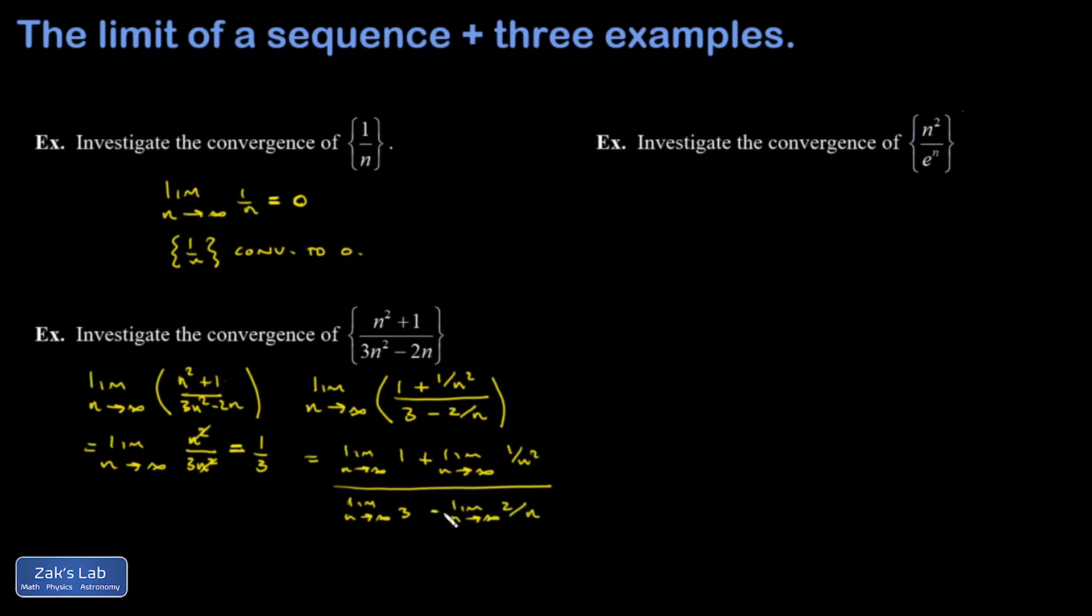I end up with a limit as n goes to infinity of a constant 1 on top, plus a limit as n goes to infinity of 1/n², and then a limit as n goes to infinity of 2/n. The limit of 1/n² is clearly going to zero, and 2/n is also clearly going to zero, so those two terms are gone. The limit of a constant is just the constant, so I end up with 1 in the numerator and 3 in the denominator. Either way, this sequence has converged to 1/3, which means the terms become arbitrarily close to 1/3 as n becomes large.